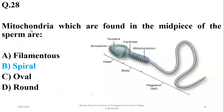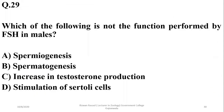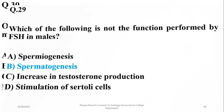Number twenty-nine: which of the following is not the function performed by follicle stimulating hormone in males? FSH is not directly concerned with spermatogenesis, but it helps in maturation, increasing testosterone production, and stimulation of Sertoli cells for liquid medium.